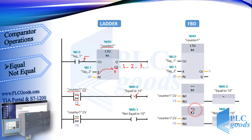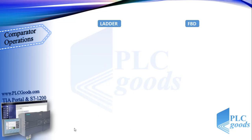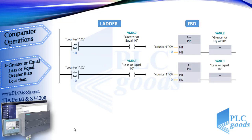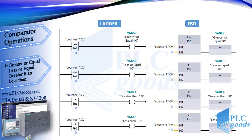The next instruction is inequality. For this one, when the counter value is 10 the output will be off; otherwise the output will be on. For equality or inequality instructions, we can exchange their inputs — it's not important which input is used for the counter value or number 10. Now let's see other comparator instructions: greater or equal, less or equal, greater than, and less than.